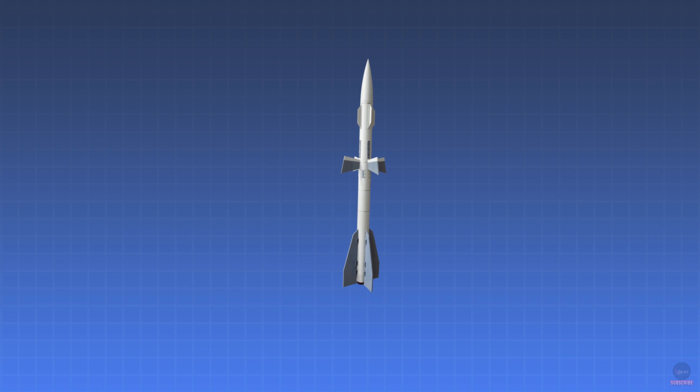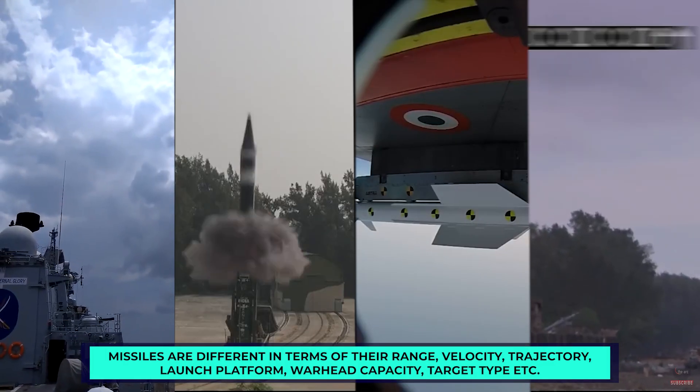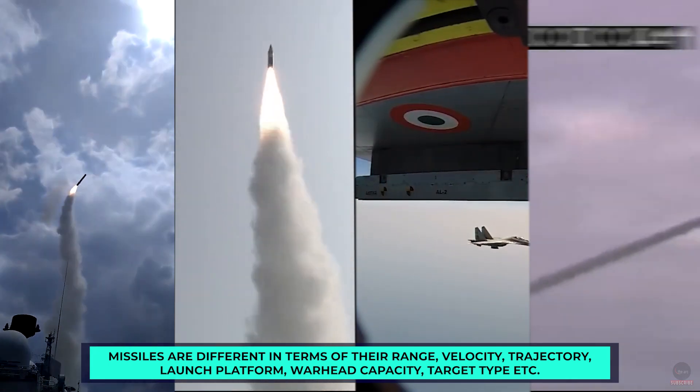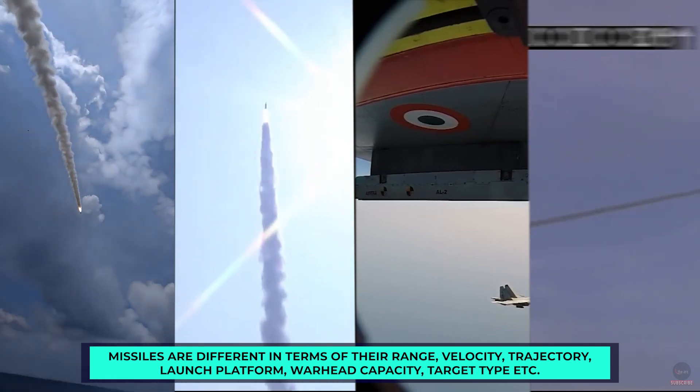In simple terms, a missile is a smart unmanned rocket that can carry a payload to a target point and cause destruction. Missiles are different in terms of their range, velocity, trajectory, type of warhead it can carry, platform from where it can be launched, etc. Depending on the objective of the missile, its propulsion system, guidance system, and aerodynamic features are designed, and missiles are classified accordingly.